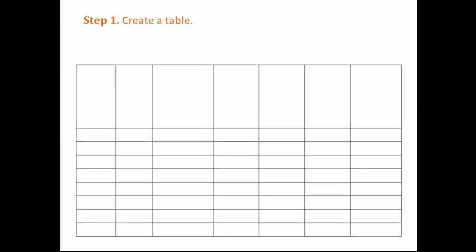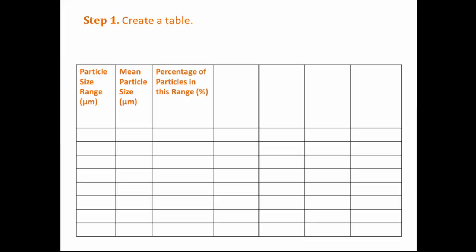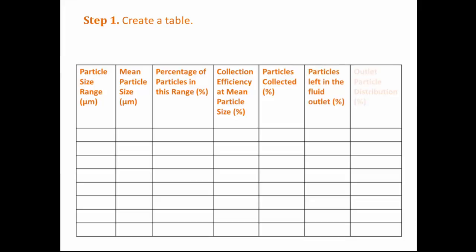Now we can start to solve the question. We draw a table to organise our calculations. We have 7 columns titled: particle size range, mean particle size, percentage of particles in this range, collection efficiency at mean particle size, particles collected, particles left in the fluid outlet, and outlet particle distribution. We will refer back to these headings in the next slides.